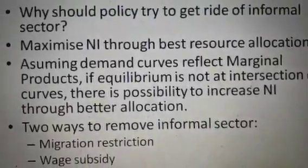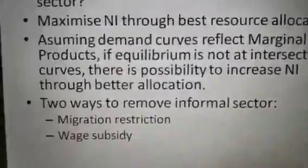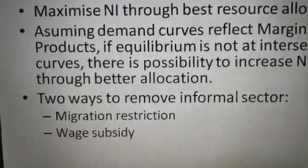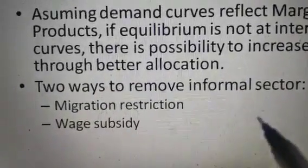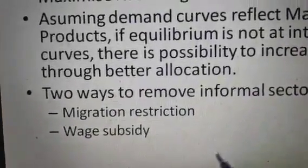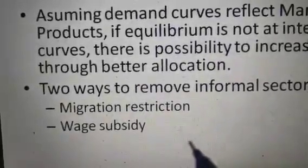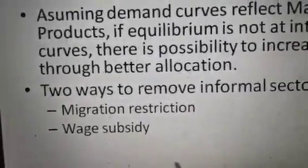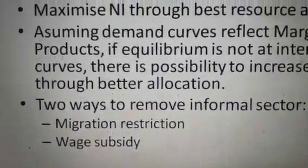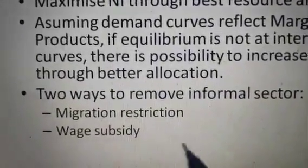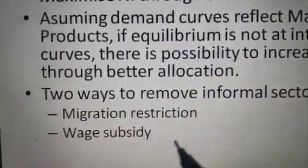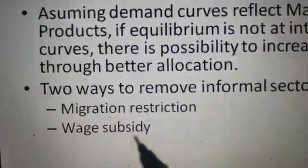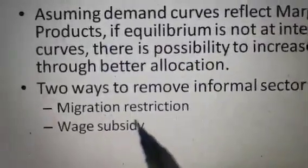When resource allocation is optimum, national income will increase. There are two ways to remove the informal sector. First, the government may restrict migration, which cannot realistically take place in a country like India where a democratic society prevails. Second is wage subsidy, which is in the hands of the government. During this COVID era, the government should provide wage subsidies to small and medium enterprises so that they can provide wages and salaries to their employees.